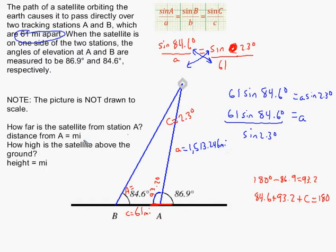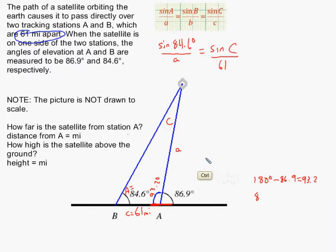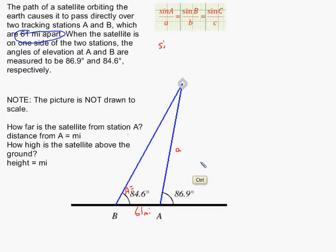That's the answer to the first question. If you have the patience, you can stick around for the answer to the second one. The second question says, how high is the satellite above the ground? Here's my satellite. How high it is above the ground would form this 90 degree triangle here.